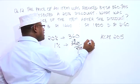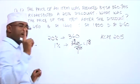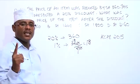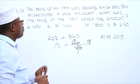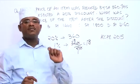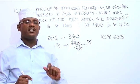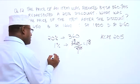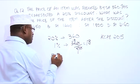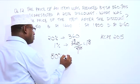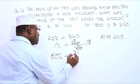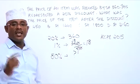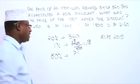So 1% is 18 shillings. What about the price after the discount, which is 80%? 80% will be 80 multiplied by 18.